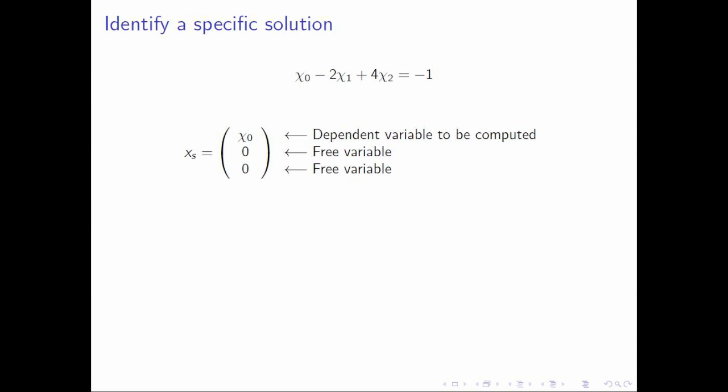Now, you have two free variables. You can choose them to have any value you want. And what we're going to do is we're going to choose them to be zero for the simple reason that it's really easy to compute with zeros. So if we plug in those zeros into the equation, then it's easy to see that chi 0 is equal to minus 1. So then a specific solution to this equation is the vector minus 1, 0, 0.